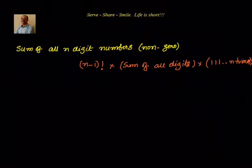We learned that the sum of all n digit numbers (non-zero) is given by (n-1) factorial into sum of all digits into 1, 1, 1 written n times.